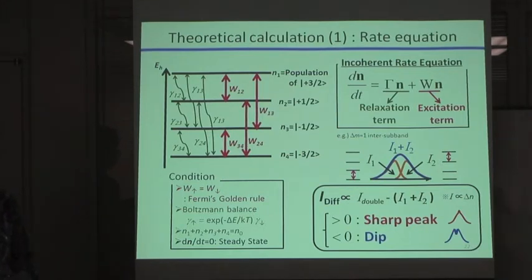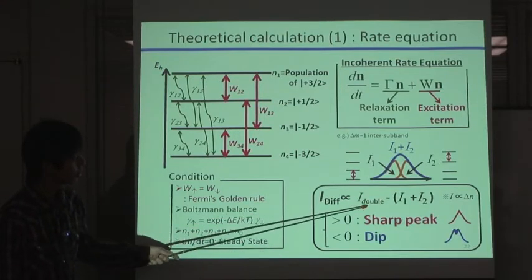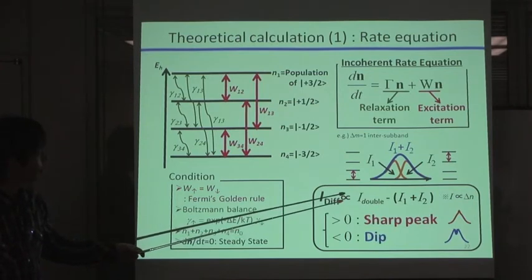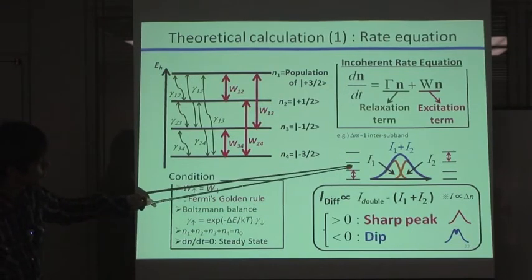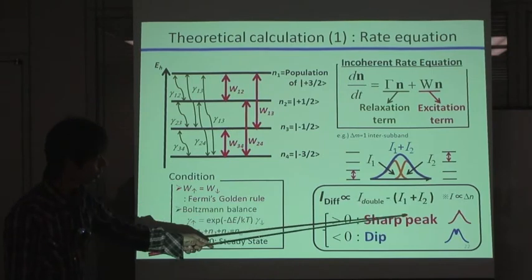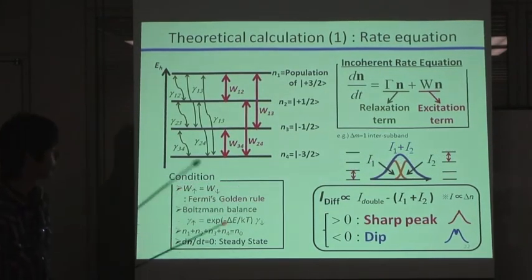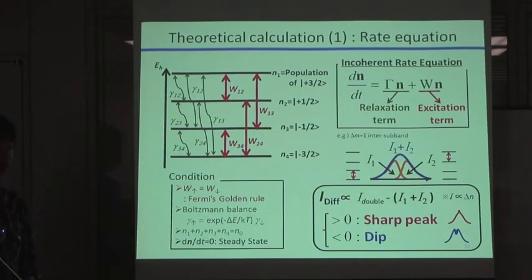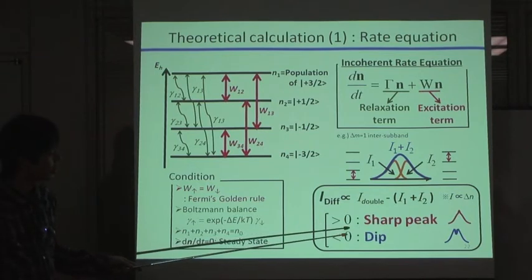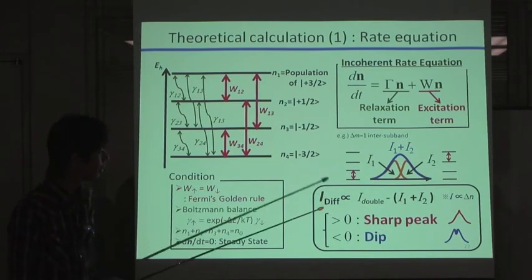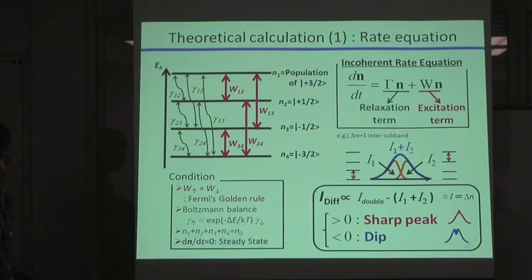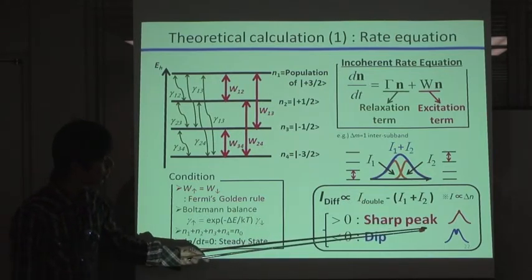And to think about the phase of the substructure, we calculate two kinds of EPR intensity. First one is indicated as I double. This means the total absorption under the situation of double excitation. And this term is the direct summation of two single absorptions. And we assume that the final phase of the substructure can be seen by seeing the sign of I difference. So the difference between this value and this value. So if the sign of I difference is positive, the EPR should be a sharp peak like this.